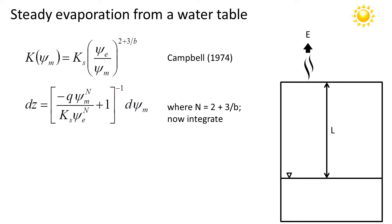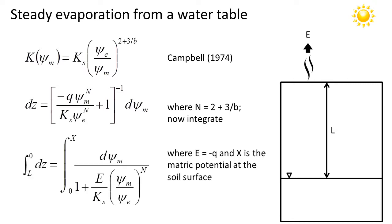Now we're ready to integrate our equation. The integral on the left-hand side is simple. We just integrate from L, the water table depth, up to 0, the soil surface. On the right-hand side we're integrating from the matrix potential at the water table, which is 0 by definition, to X, which is the matrix potential at the soil surface.